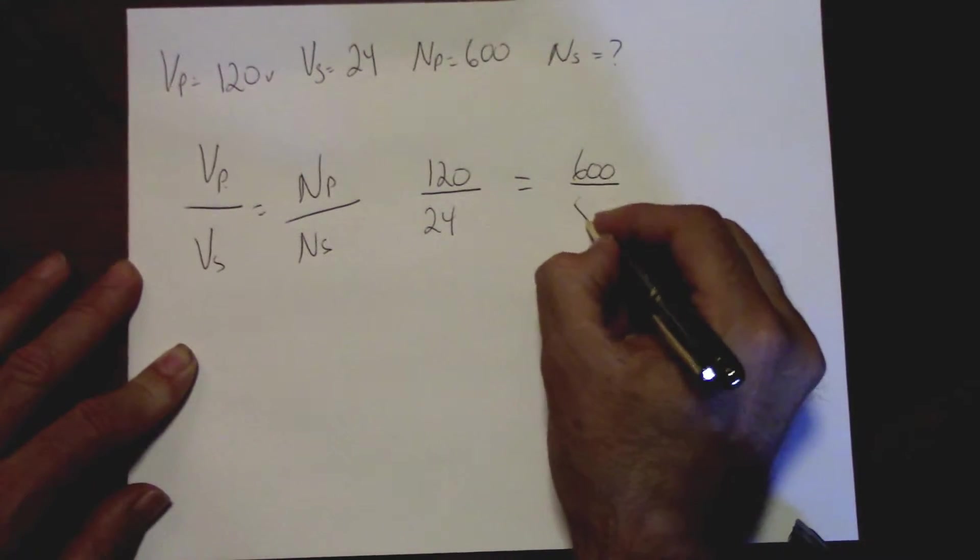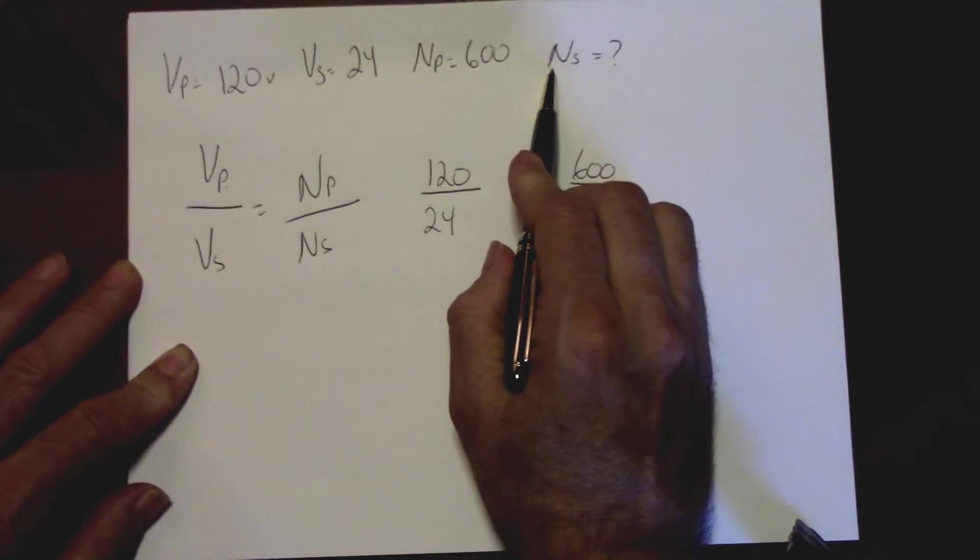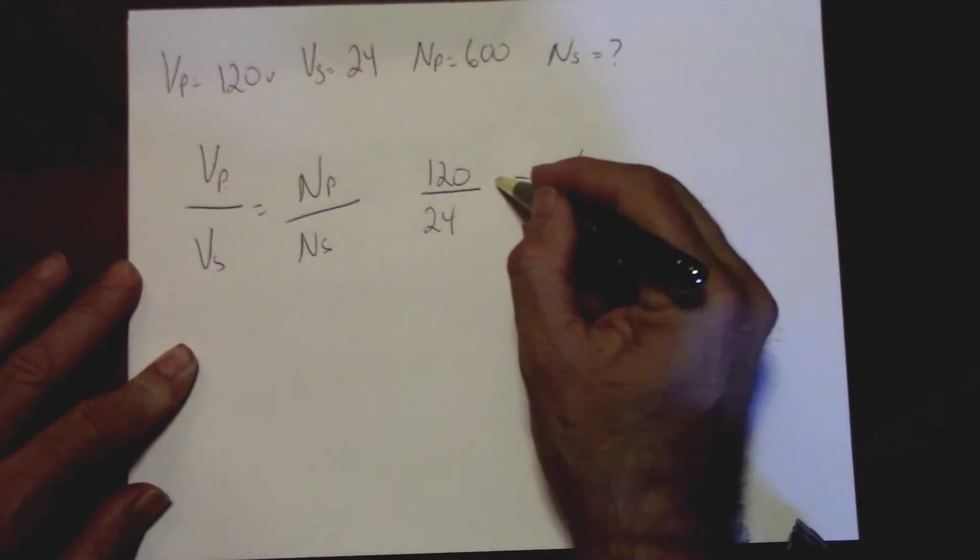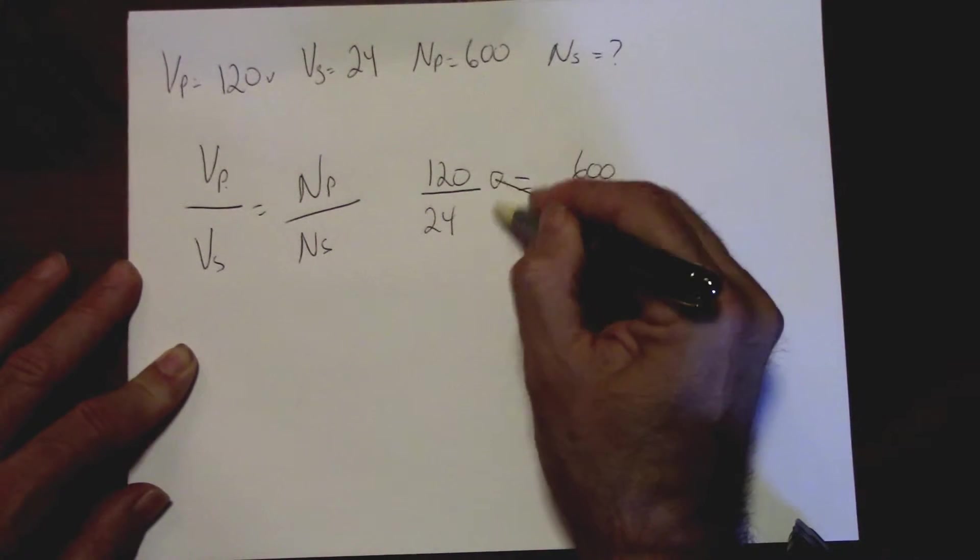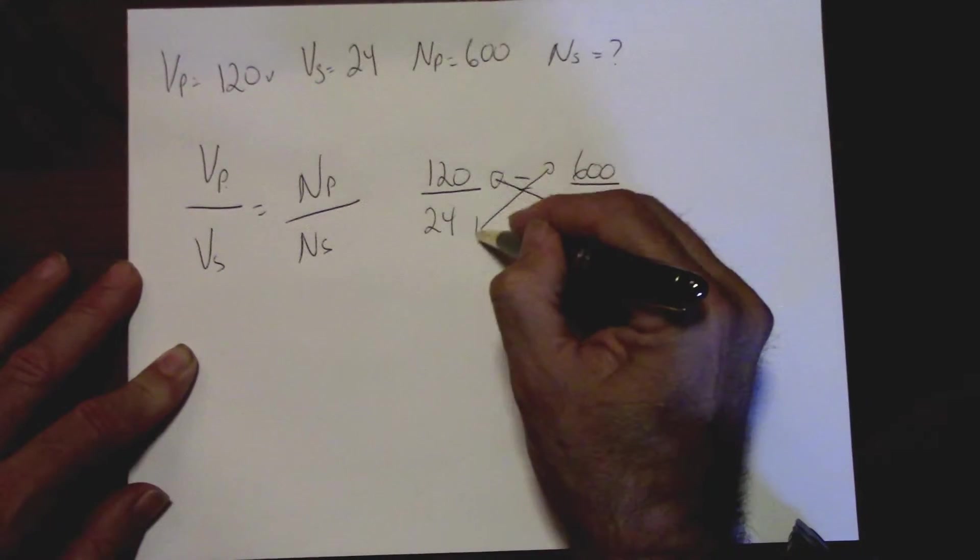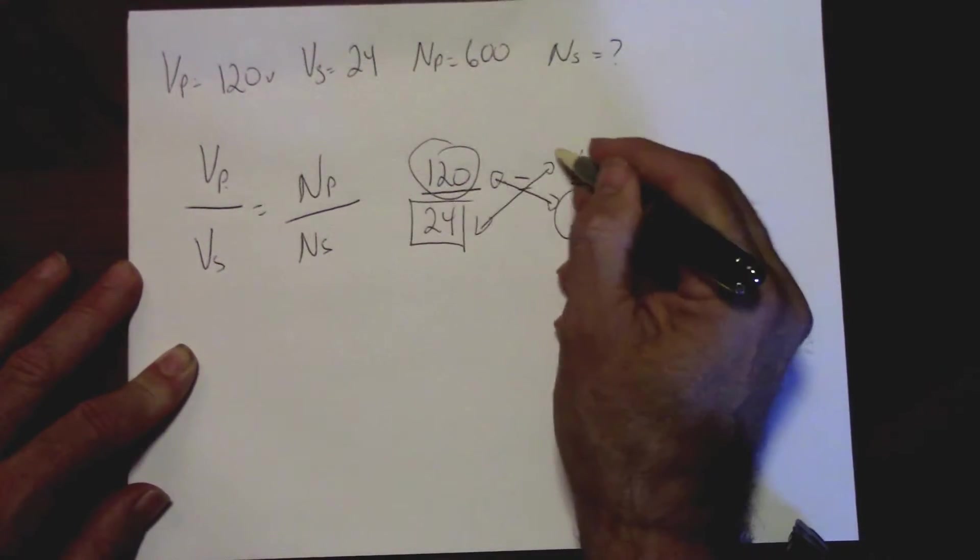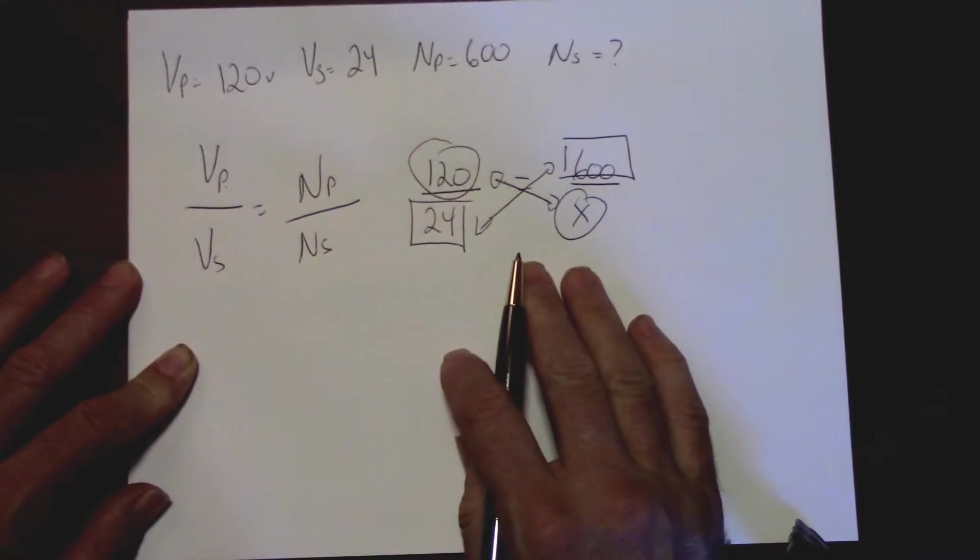And we've got to find the number of turns on the secondary so I just put an X. What I do is cross multiply. Okay, so I'll say my circles stay with my circles and my squares will stay with my squares.